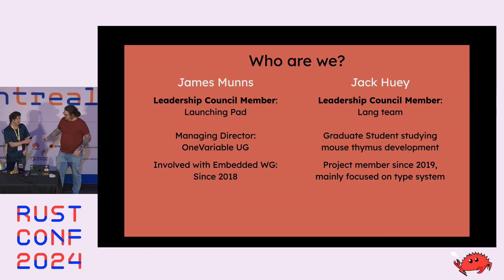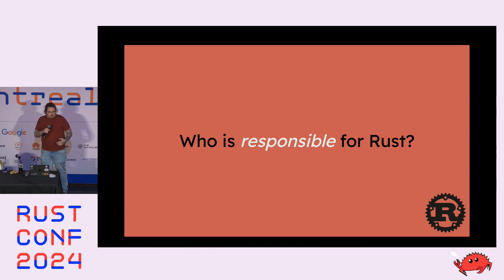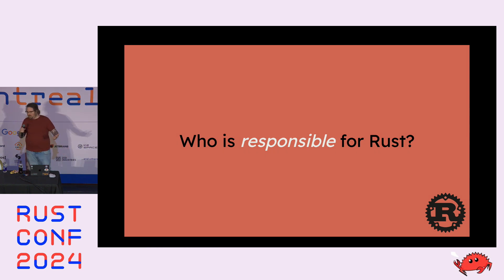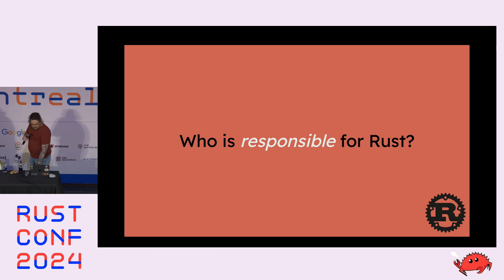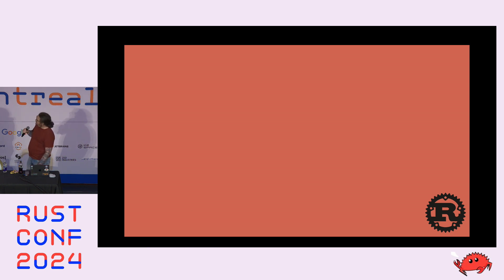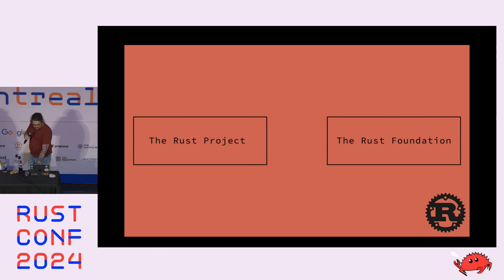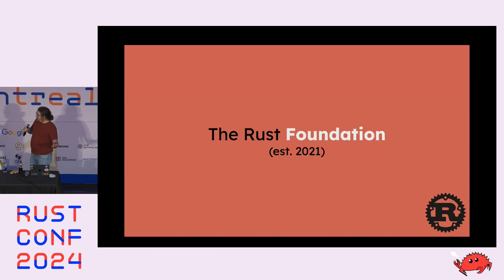One of the most important questions is: who is responsible for Rust? We know that Rust happens — it has releases, it's a tool that we all use — but who's responsible for making Rust what it is? There might be two groups you've heard of before: the Rust project and the Rust Foundation. There are two organizations you might think of as responsible for Rust.